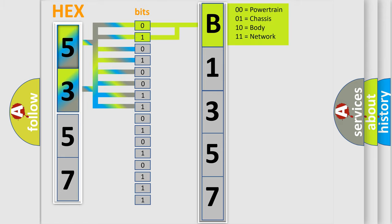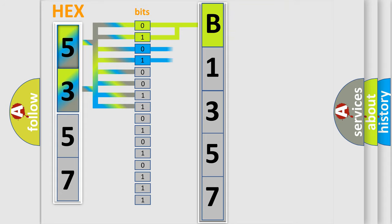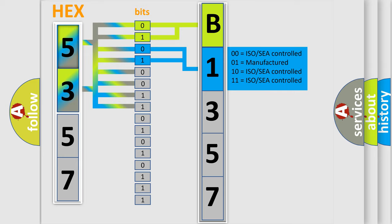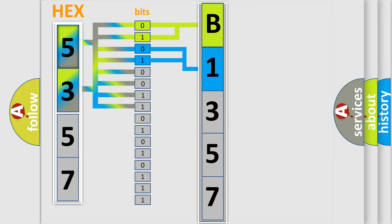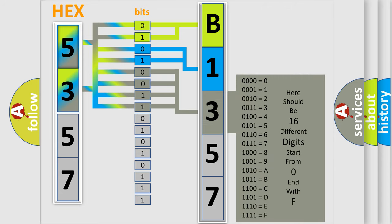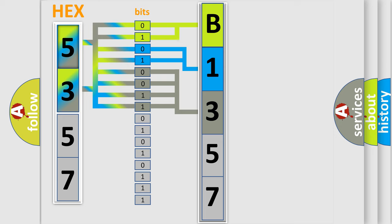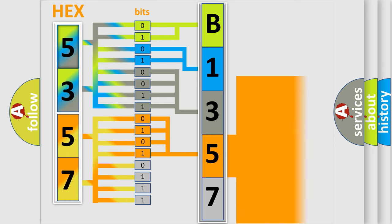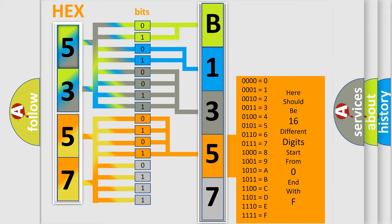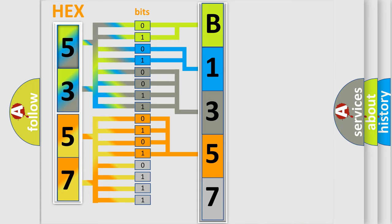By combining the first two bits, the basic character of the error code is expressed. The next two bits determine the second character. The last four bits of the first byte define the third character of the code. The second byte is composed of a combination of eight bits: the first four bits determine the fourth character, and the last four bits define the fifth character.